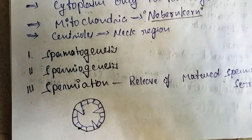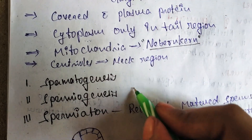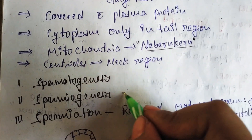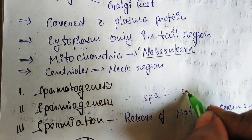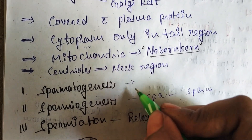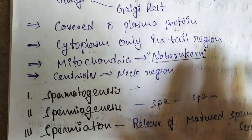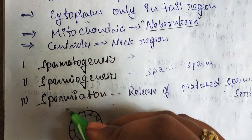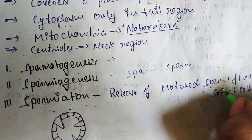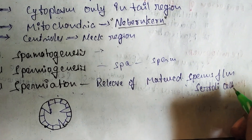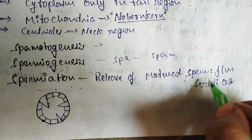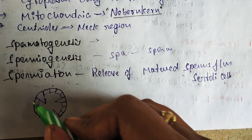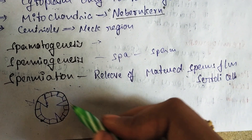To summarize, the three main processes are: spermatogenesis — the process of formation of sperms; spermiogenesis — the changes of spermatids into sperms; and spermiation — the release of matured sperms from the Sertoli cells into the lumen of the seminiferous tubules.